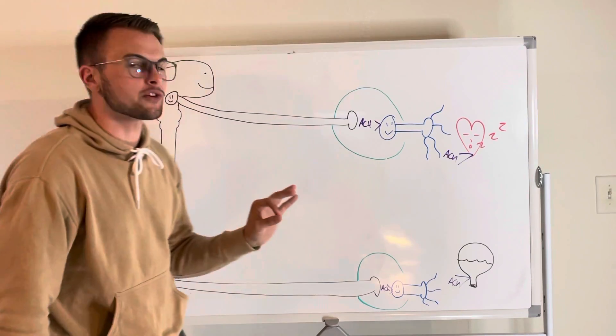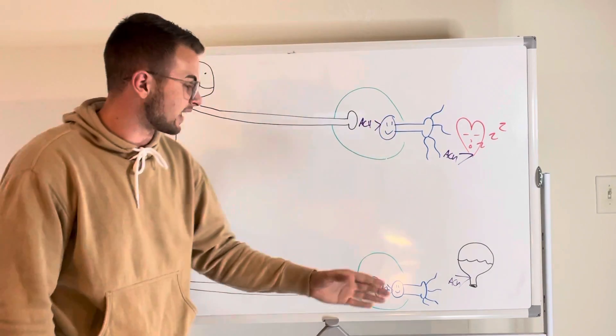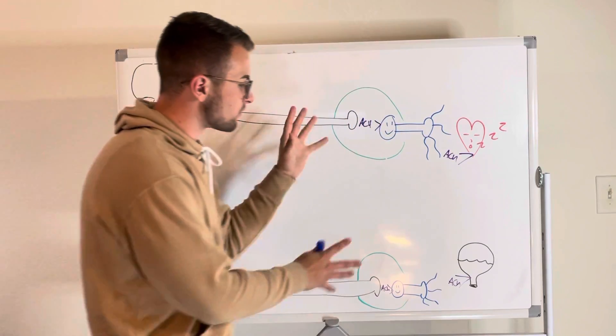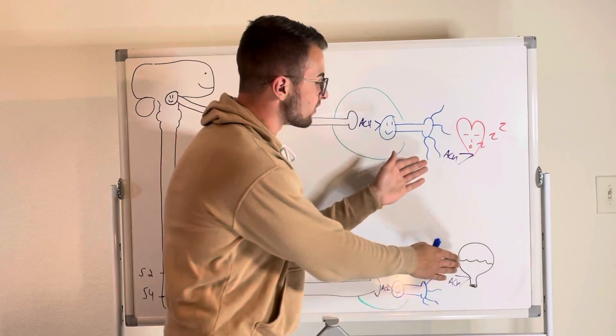Another difference between this system and the sympathetic system is that the parasympathetic ganglia, which are shown here in green, we can see that they're very close to or even inside of the affected tissue.